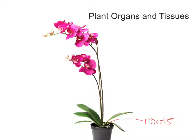Roots are our first organ and the role of the roots is for the absorption of water and minerals — water by osmosis and minerals taken up via active transport. So we've got roots there.